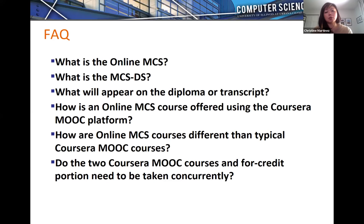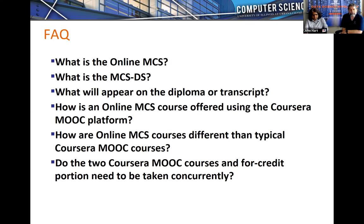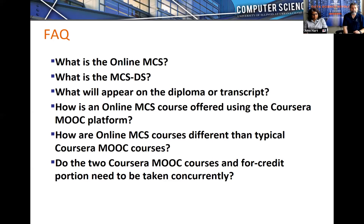Regarding what appears on the diploma or transcript: the degree simply says Master of Computer Science from the College of Engineering at the University of Illinois — the same as for on-campus students. There will be nothing on the diploma or transcript about receiving the degree online, because there is one degree and the online courses meet the exact same requirements as on-campus courses.